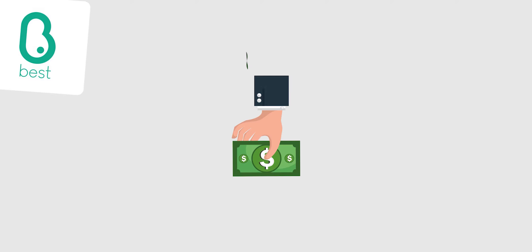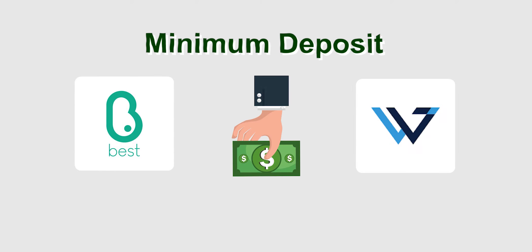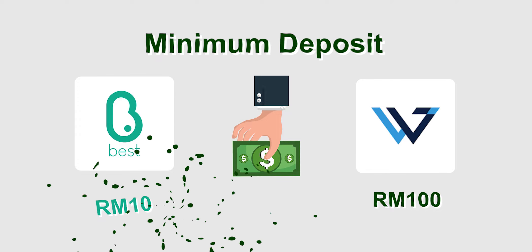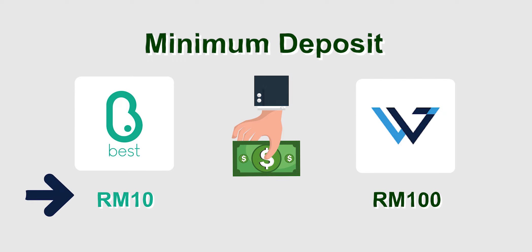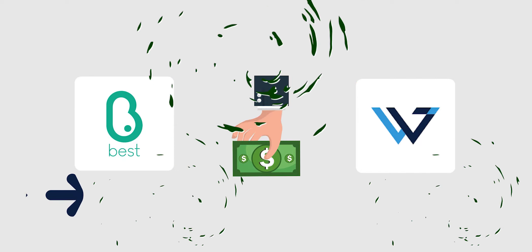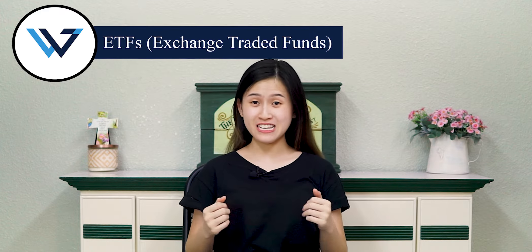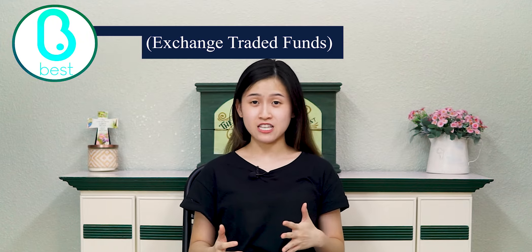The minimum deposit for Wahid is RM100 while the minimum deposit for Best Invest is RM10. In terms of minimum deposit, Best Invest is a better option due to its lower minimum deposit. The main difference between both is that Wahid invests in a portfolio of ETFs while Best Invest invests in a portfolio of Unit Trusts.